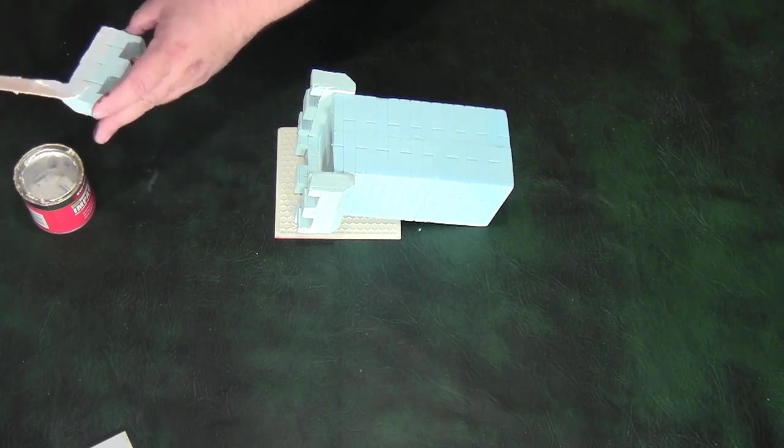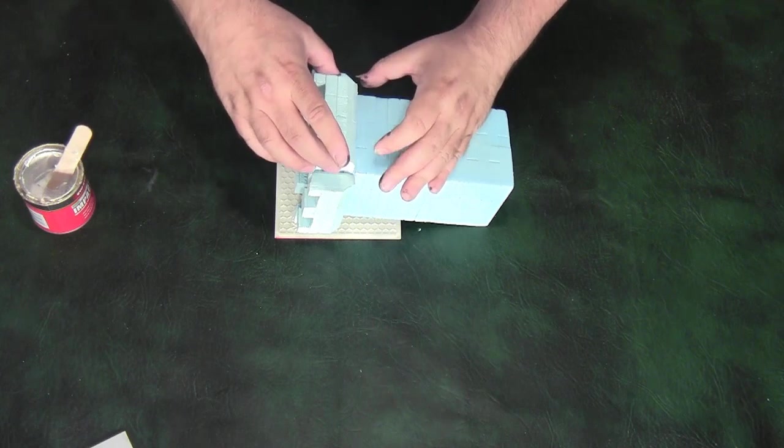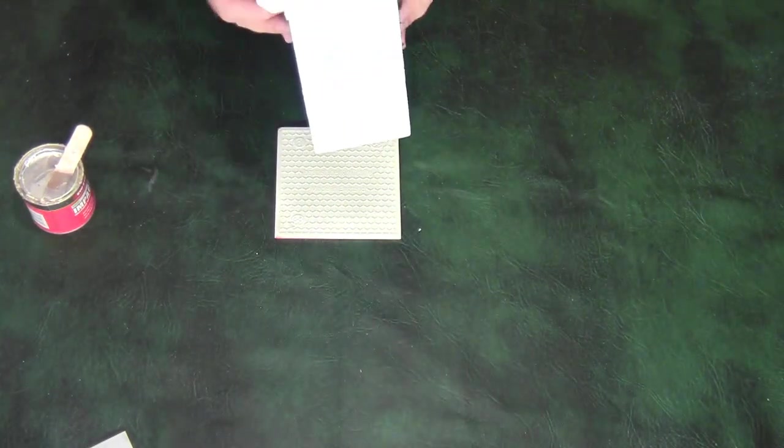Once all four of the battlements are glued in place, give it an overview, just to make sure they're lined up. And then you can put it to the side, to let the glue cure.